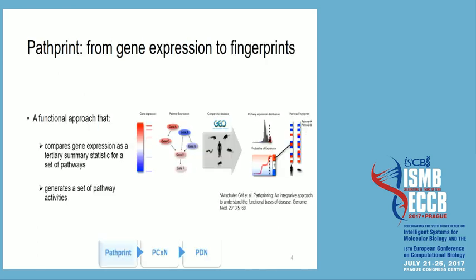The modules also work independently. The first module, Pathprint, goes from gene expression to fingerprints. If you follow the diagram, it starts from gene expression, which it translates to pathway expression using the gene members of its pathway. Then it compares that to a very large group of arrays — thousands of arrays — to get a distribution and the relative activity for each of the pathways in the network.